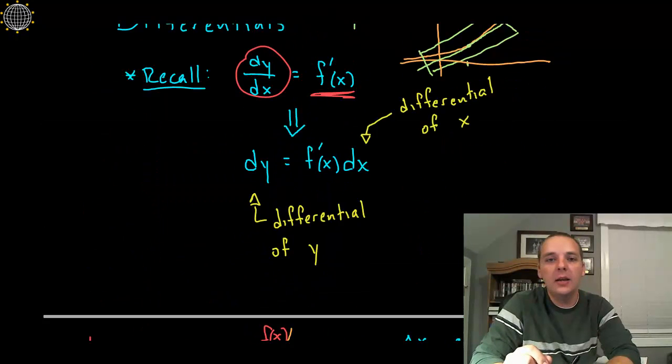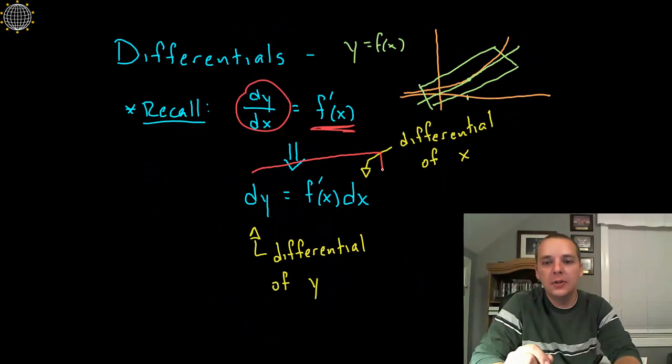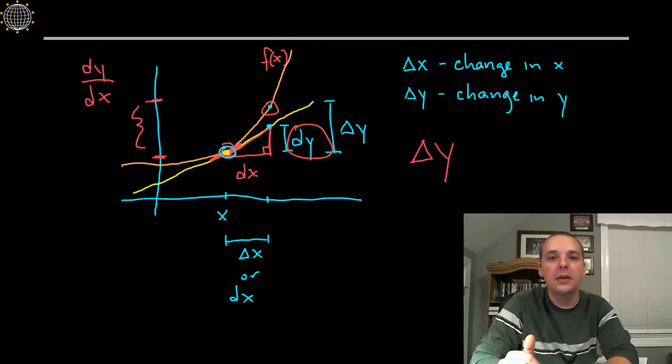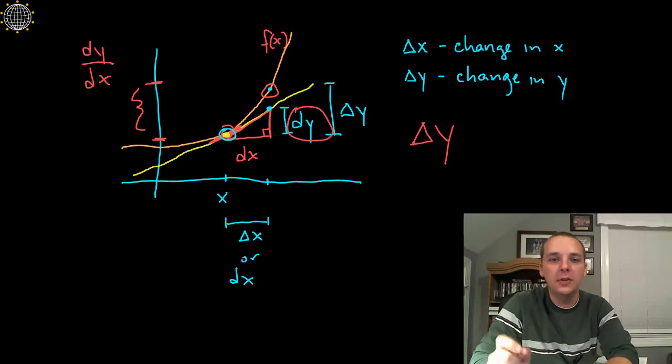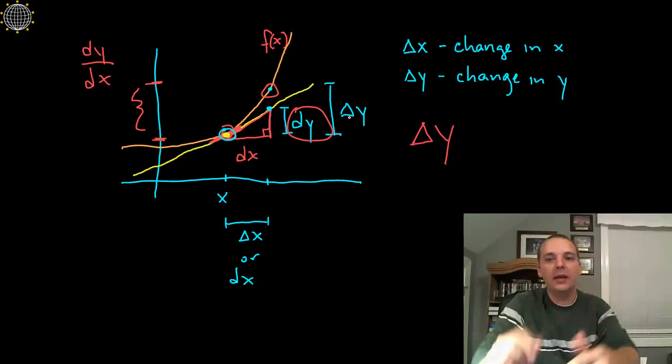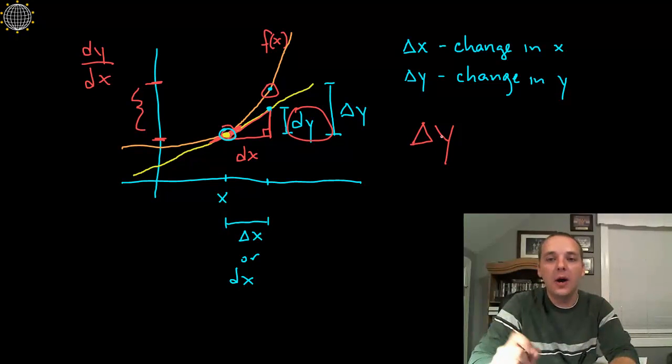Now what we're going to try to do though is use the dy to approximate what that actual change in height is, and it turns out using calculus the dy is very easy to find. We have a formula for dy, it's f'(x)dx, it's actually very quick to compute. The main observation to notice is that at least locally, at least around x, the change in height for y, delta y, is roughly the same as dy.